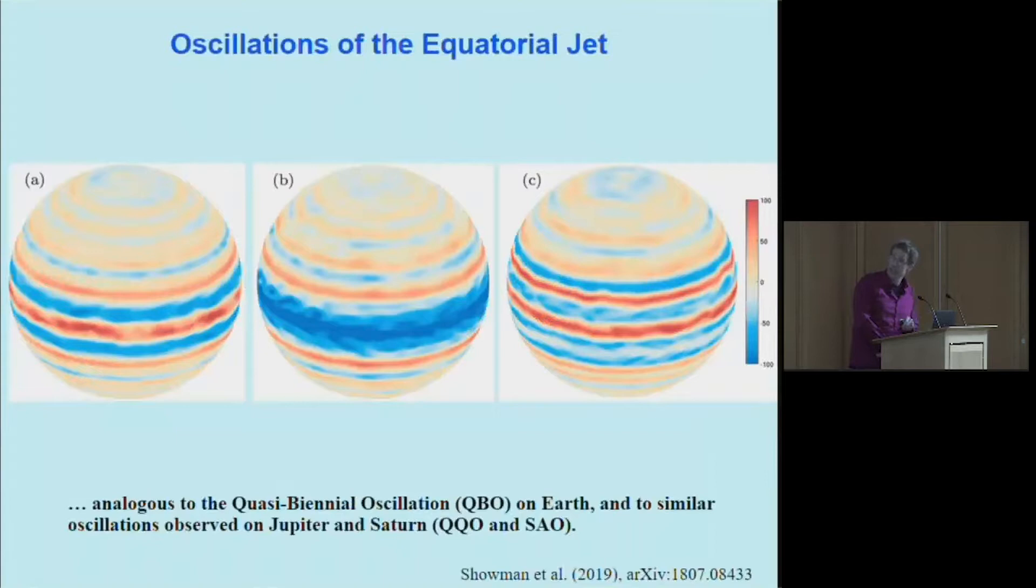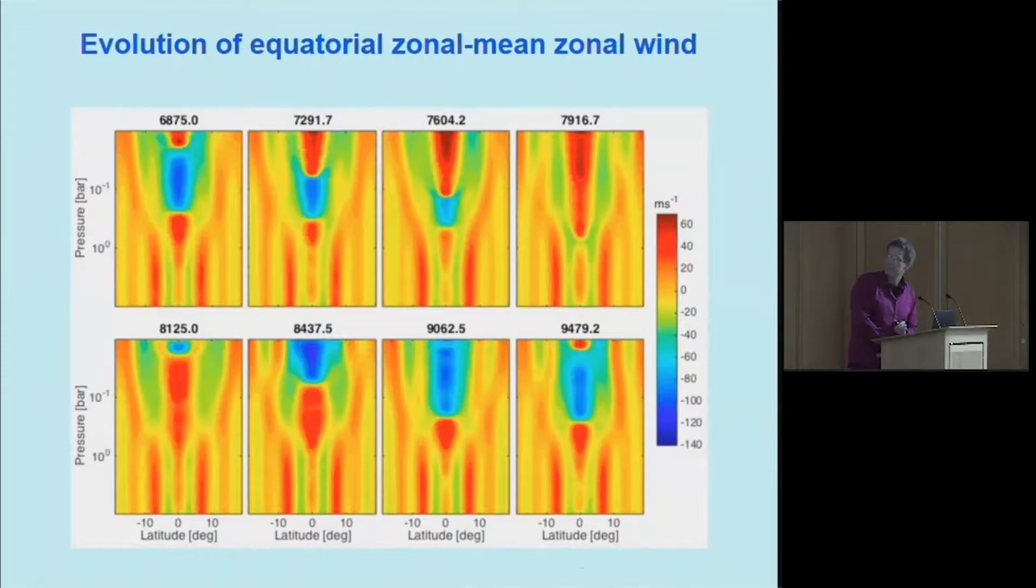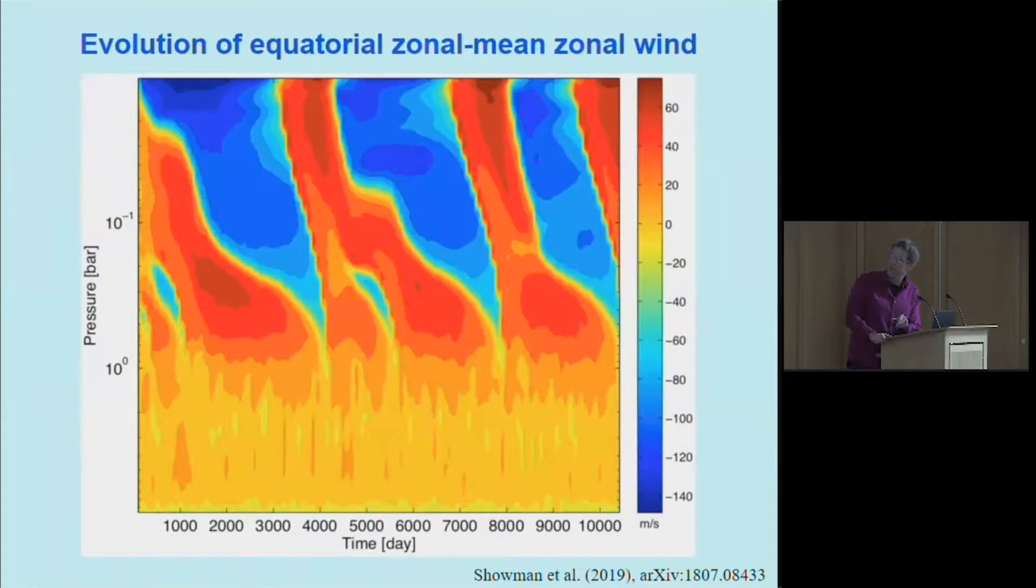On to the oscillations in my last couple minutes here. This shows several different time snapshots in a single numerical simulation, and you can see the sign of the equatorial jet switches from eastward to westward back to eastward again. In this case the period is about 12 years.